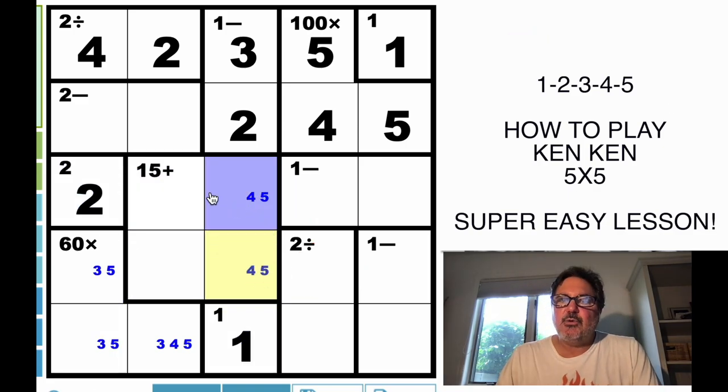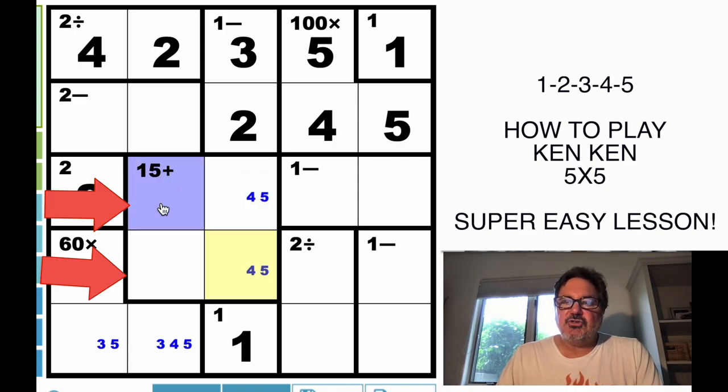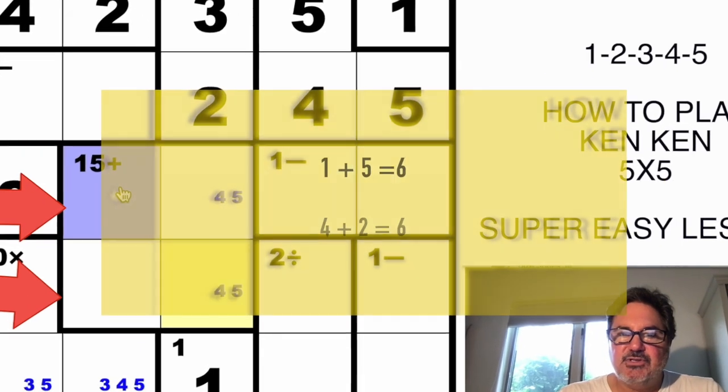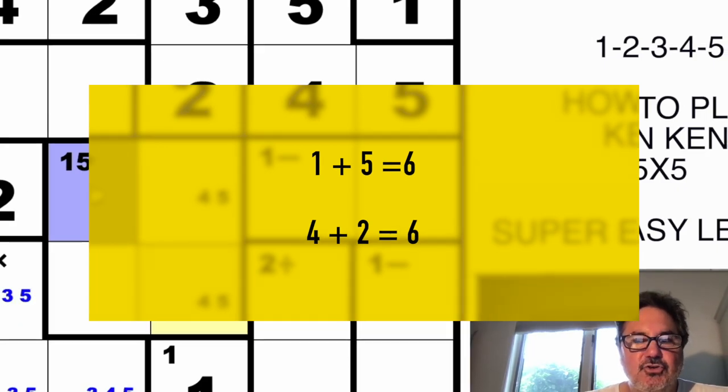And if we're saying that the 4 total equal 15, and 4 plus 5 equals 9, therefore the 2 digits that have to be here need to total 6. The only digits that can total 6 is going to be a 1 and a 5, or a 4 and a 2.